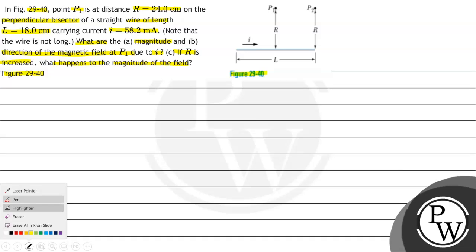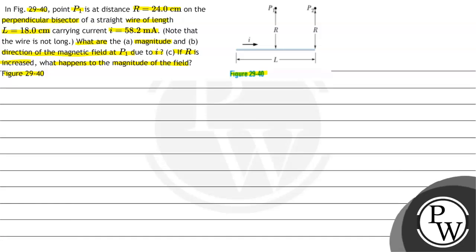To understand this question we must first understand the key concept. The key concept behind this question is the magnitude of magnetic field at a point at some distance from a straight wire.